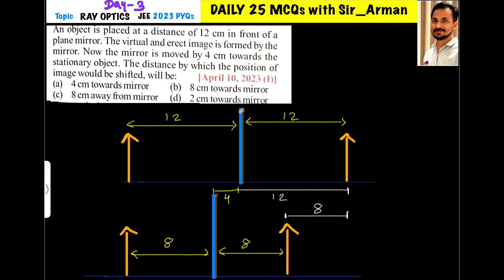Now, the mirror is moved by 4 cm towards the object. The question is: by what distance will the position of the image shift?